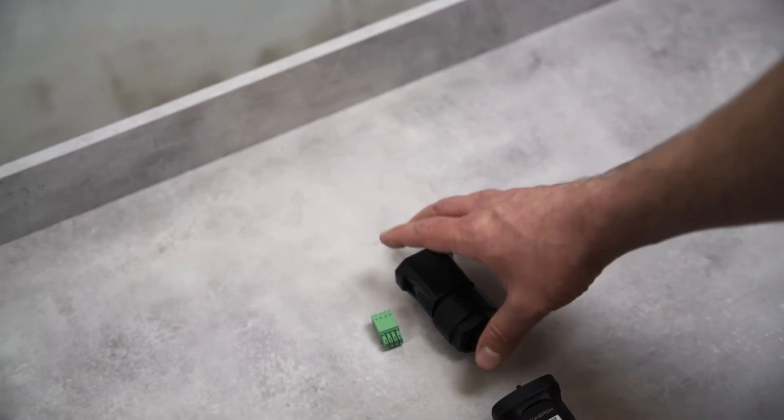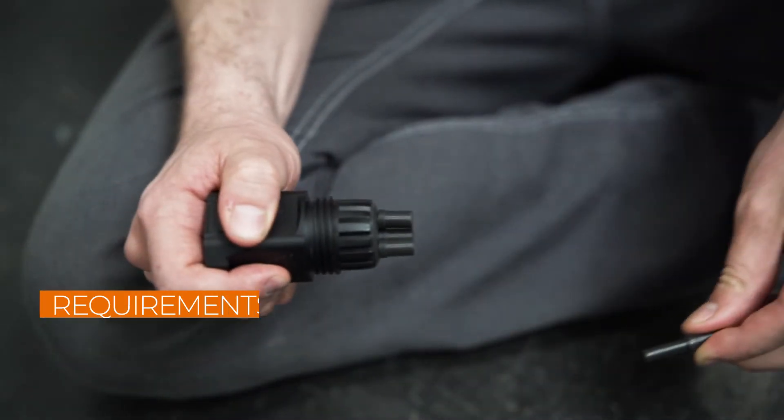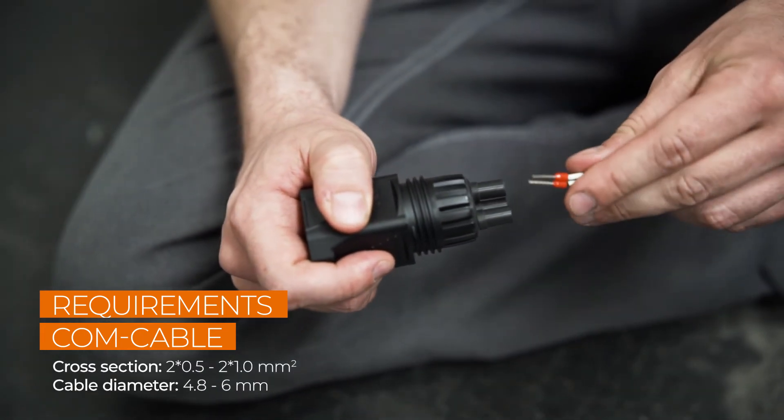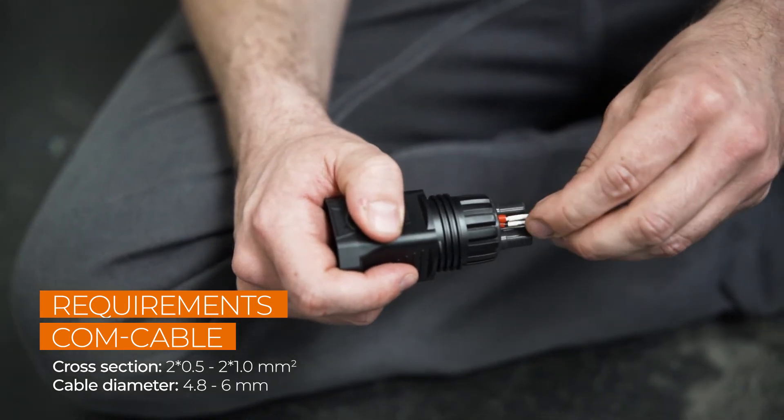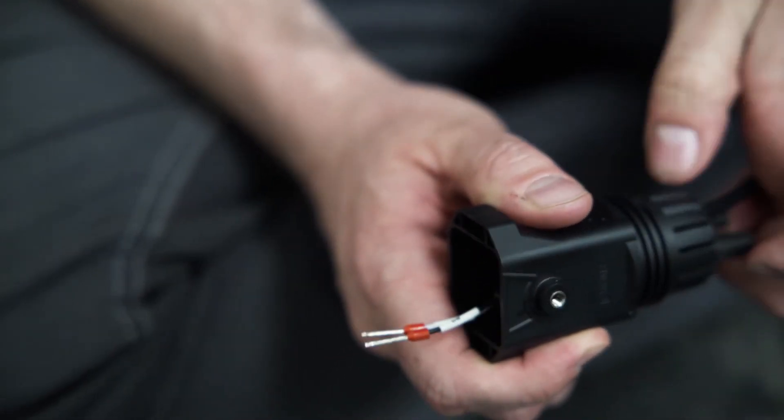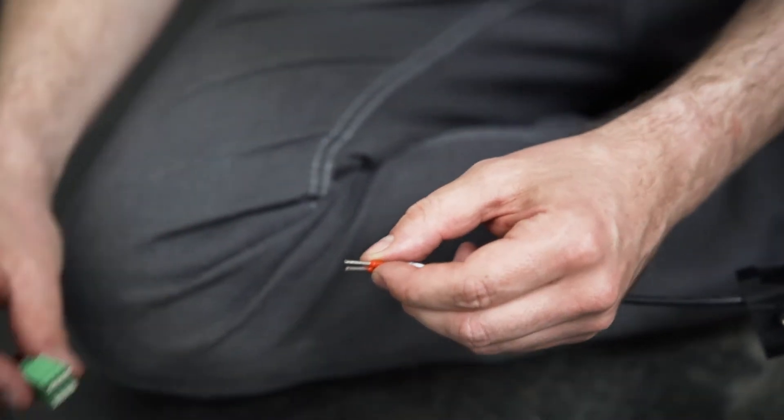In the next step, we will connect the energy meter to the communication port of the inverter. Remove approximately 4-5 cm of the cable sheath of the communication cables. Then strip approximately 7-10 mm off the inner cables. If necessary, you may have to fit the cables with end sleeves before you push them into the plug.